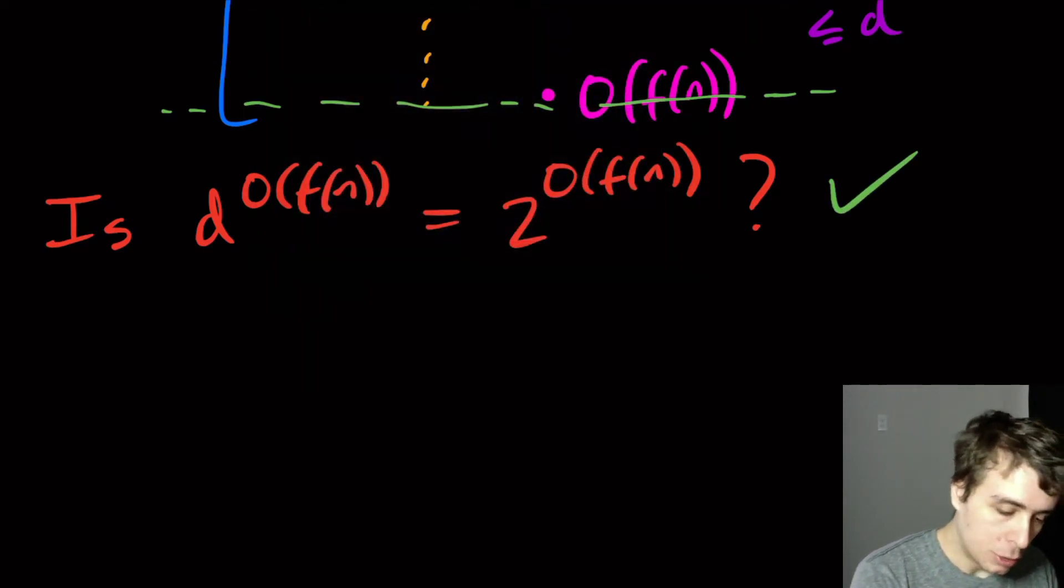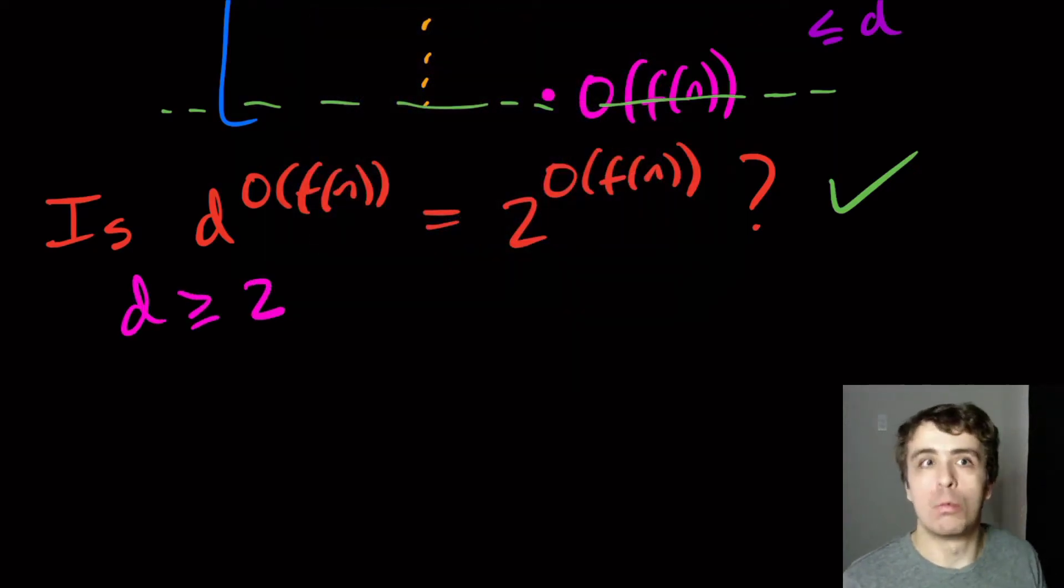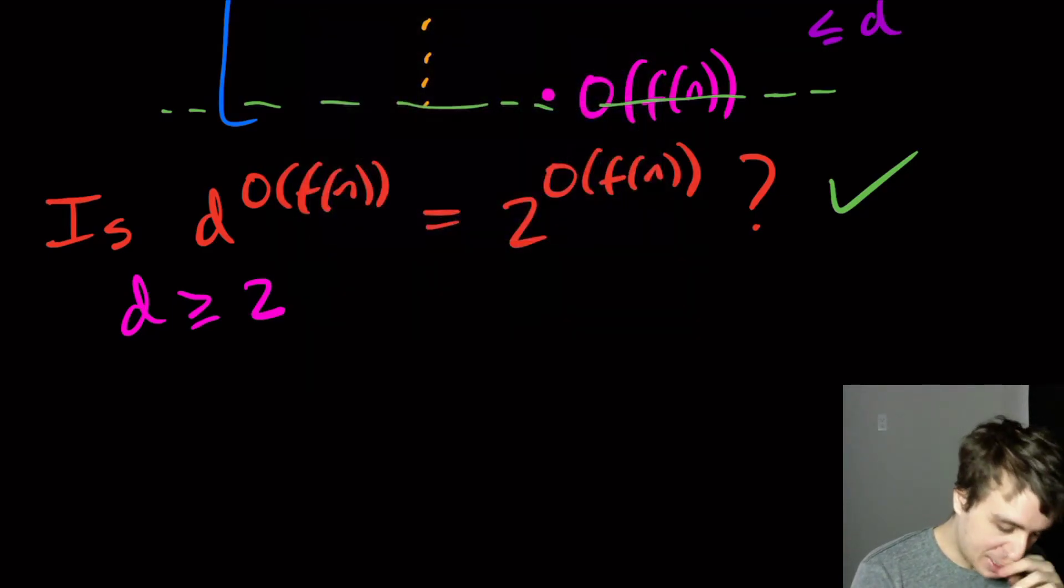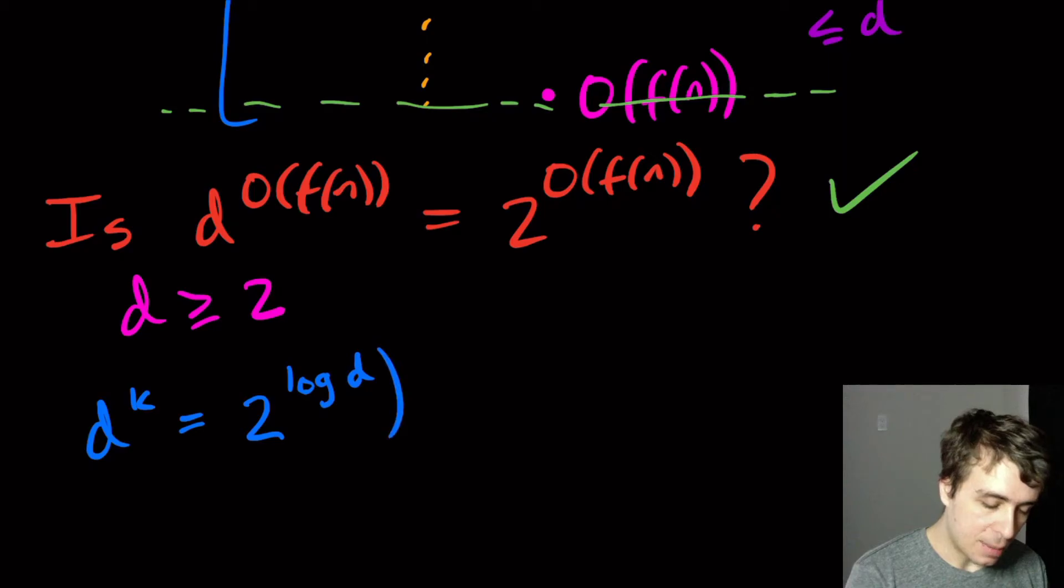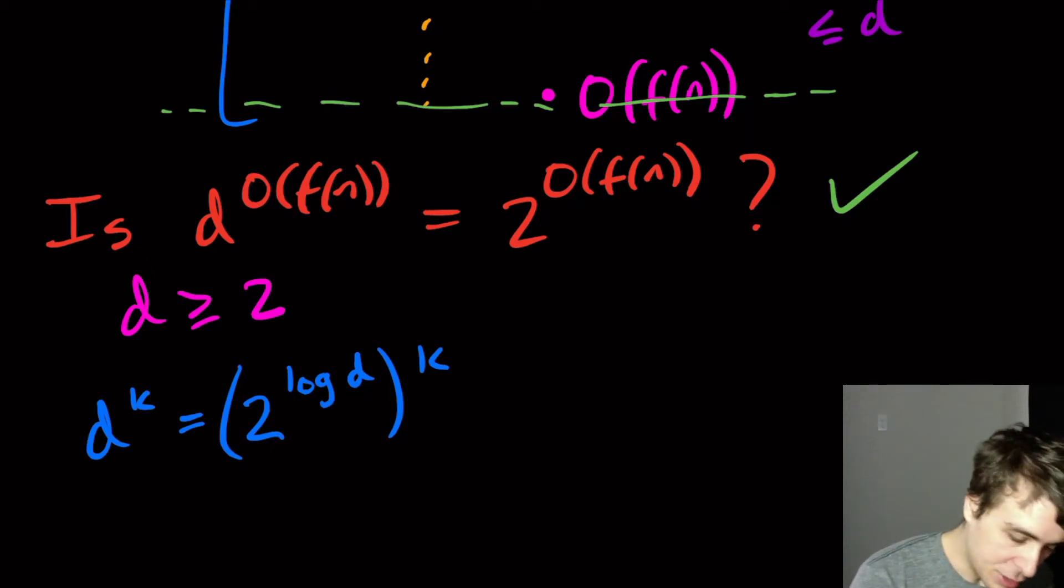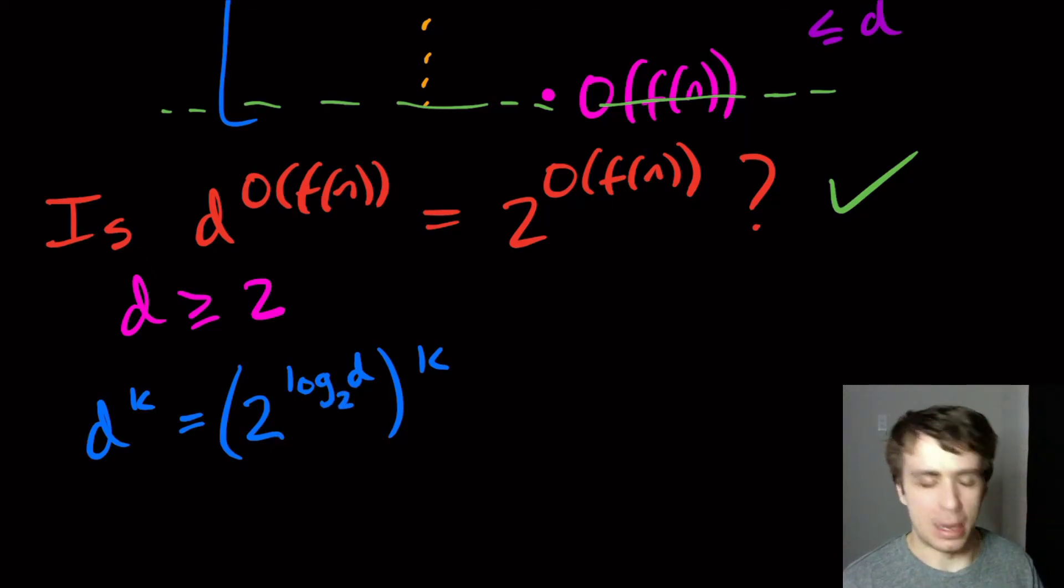And why is it true? So we're going to assume without loss of generality that D is at least two, because if it's one, then it's a deterministic machine, and we don't have to do this whole thing anyway. So we'll assume that it's at least two. So another way to rewrite D to the K is the same thing as saying, the word K is just anything, it could be anything, is the same thing as saying 2 to the power log D times K. Since 2 to the, actually, this is log base two, but honestly, it's not going to matter, as we'll see. So 2 to the log base two of D, that just evaluates to D. So we get this over here.